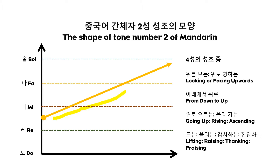Look at this shape please. This shape reminds us of looking or facing upward, from down to up — it's going up, rising, ascending. It's lifting, raising. Lifting and raising reminds me of thanking and praising, maybe to God. So these are the four major key concepts of tone number two derived from its shape.